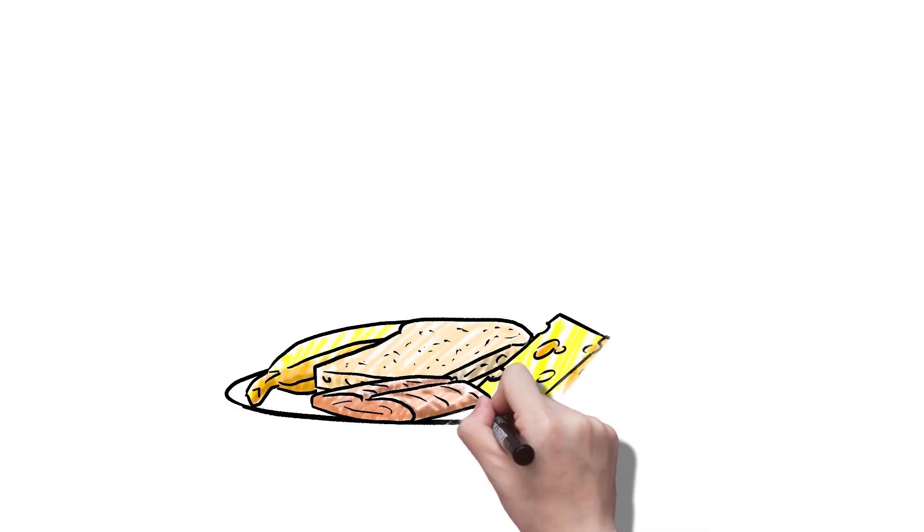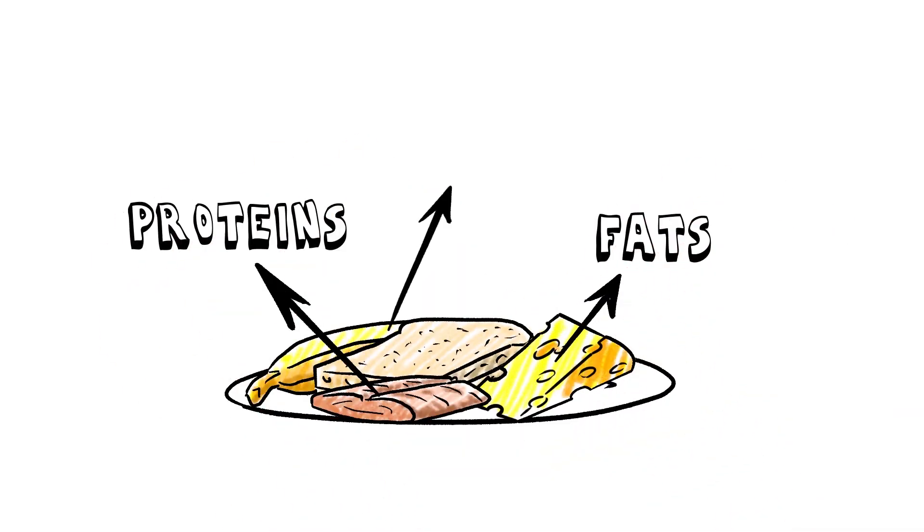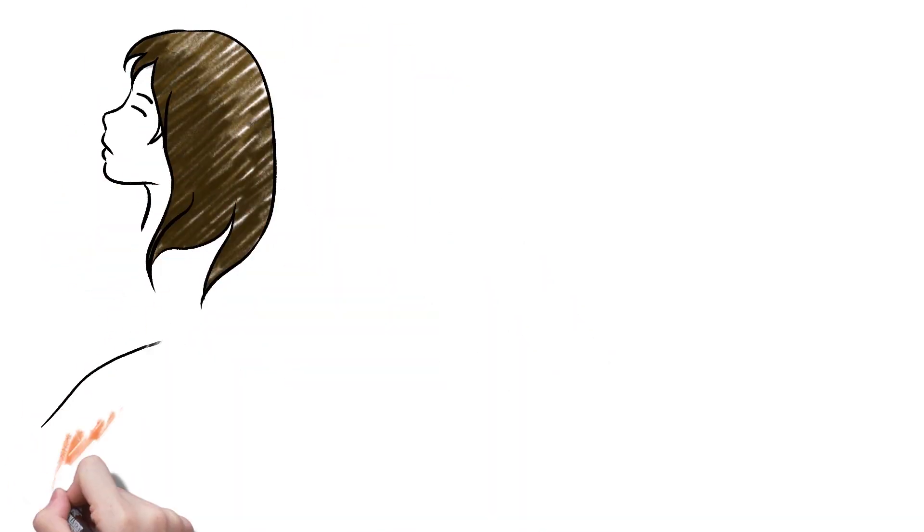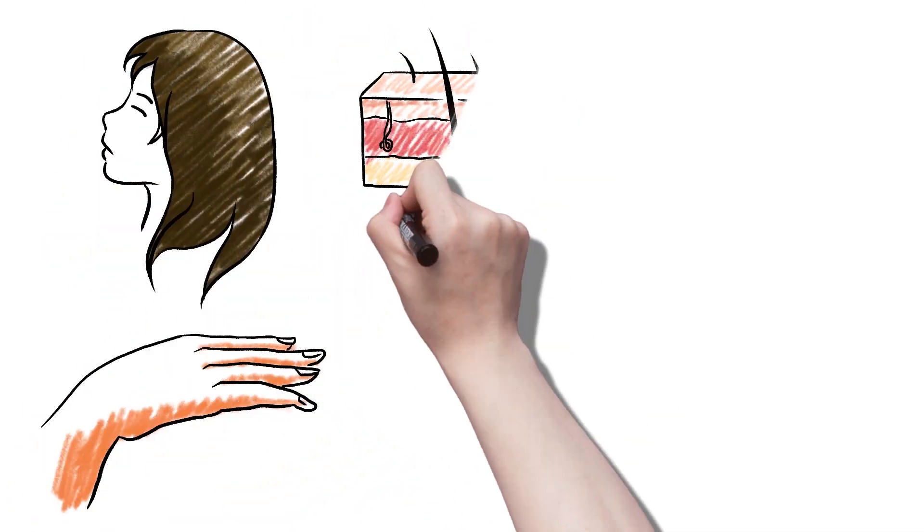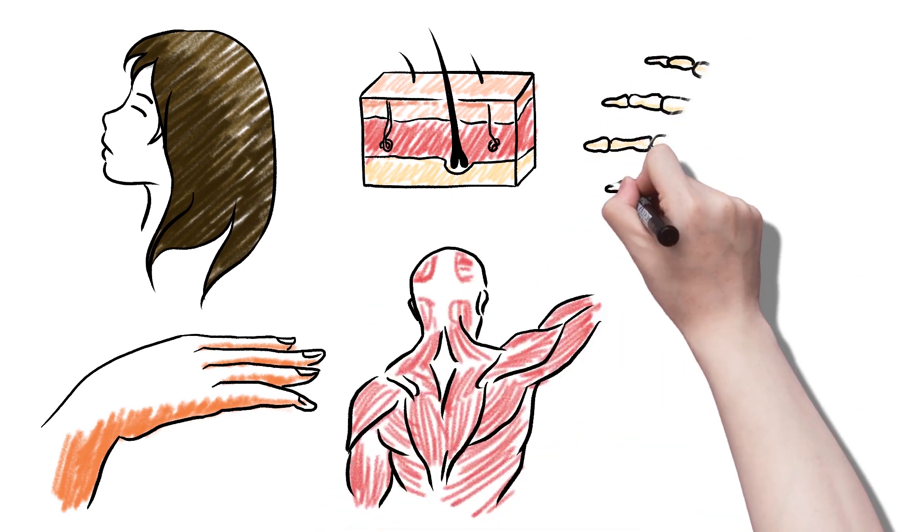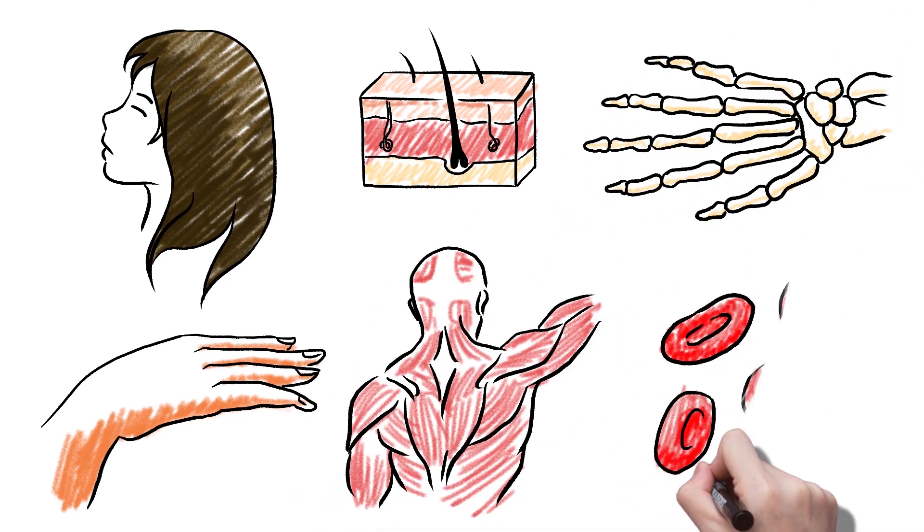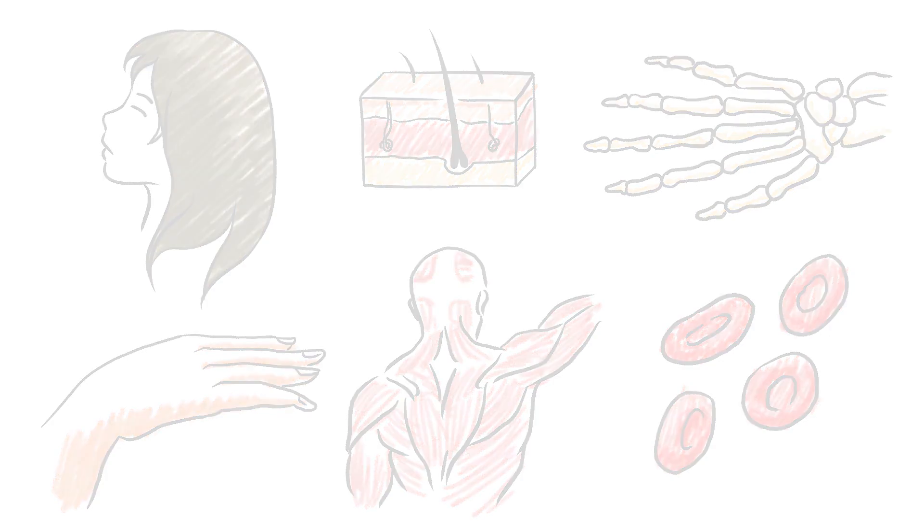Protein is one of the three macronutrients, along with fats and carbohydrates. Protein is the main building block of the human body. It makes up our bones, muscles, cartilage, skin, hair, nails, immune cells, enzymes and even the oxygen-carrying hemoglobin in our blood.